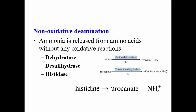Non-oxidative deamination is a direct releasing of ammonia — that means ammonia is released from amino acids without any oxidative reactions. Examples of non-oxidative deamination include dehydratases and desulfhydratases. Dehydratases remove ammonia from serine and threonine to form respective keto acids and ammonia. Desulfhydratases remove the amino groups from cysteine.